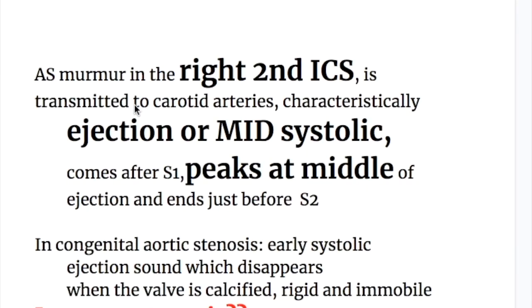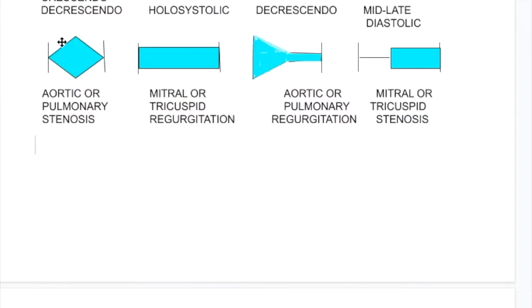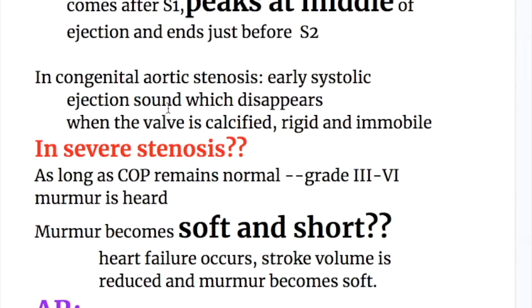The aortic stenotic murmur, heard in the right second intercostal space, is characteristically an ejection or mid-systolic murmur - it comes after the first heart sound, peaks in the middle, then declines and ends before the second heart sound. In congenital aortic stenosis, there is an early systolic ejection sound, which disappears when the valve becomes calcified, rigid, and immobile. Disappearance of this ejection sound is not a good feature.